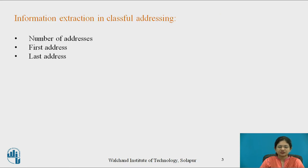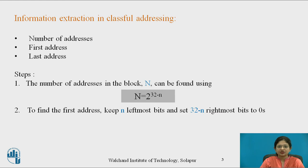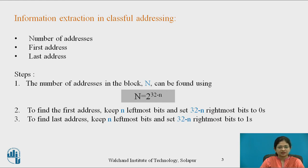Now, information extraction in classful addressing. Information means the number of addresses present in a block, and what is the first address and the last address of the block. To calculate the number of addresses in a block, the formula is: n equal to 2 raised to power (32 minus n). To find the first address, keep the n leftmost bits as-is and set the 32-minus-n rightmost bits to 0. Similarly, to find the last address, keep the n leftmost bits as-is and set the 32-minus-n rightmost bits to 1s.